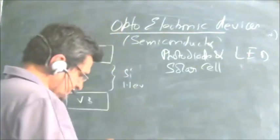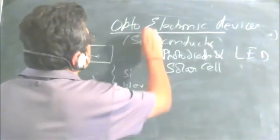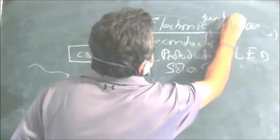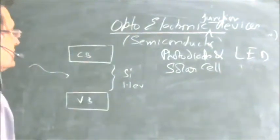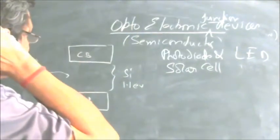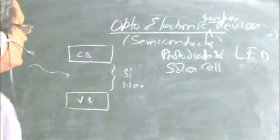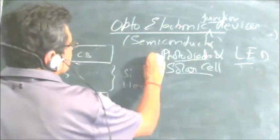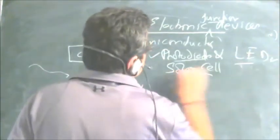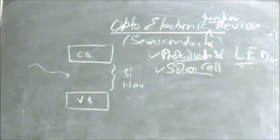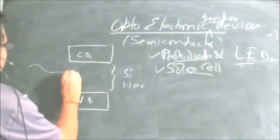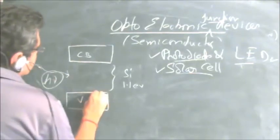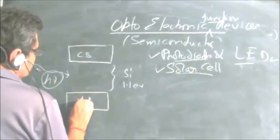In this lecture, we will cover various types of photoelectronic junction devices. These are PN junction diodes, and the basic principle on which these three types of junction devices — photodiode, LED, and solar cell — operate is based on the relationship between the photon's energy and the energy gap of the semiconductor.